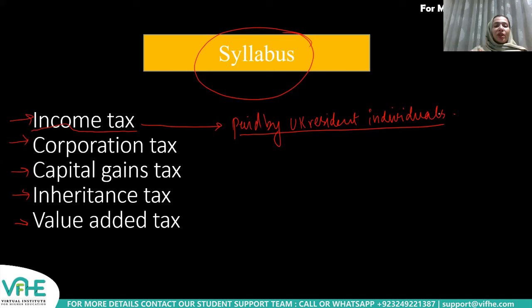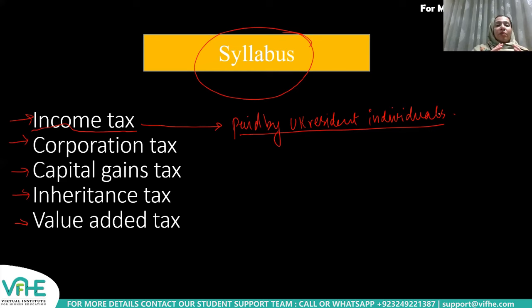On these sources of income, there is an implication of Income Tax received by a UK resident individual, whether the income is generated from the UK or any other part of the world — be it rental income, dividend, employment income, or whatever income is generated in a year. An individual is liable to pay Income Tax on it.